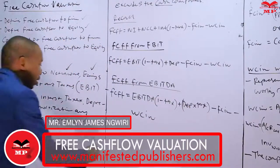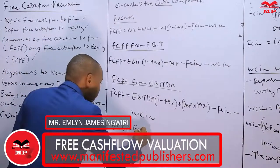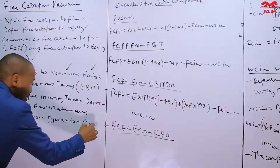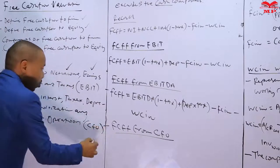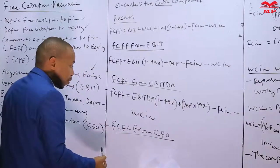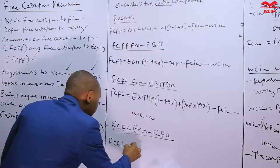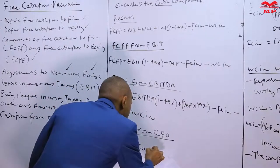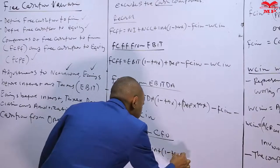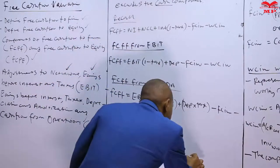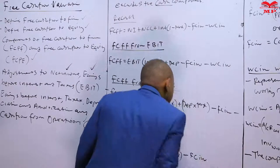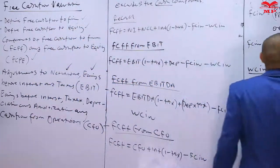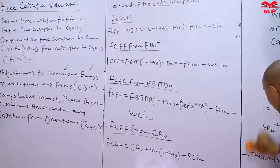Finally, we can also start from cash flow from operations. FCFF from CFO: we take CFO — cash flow from operations — then we add interest times (1 minus tax), then we subtract fixed capital investments. That summarizes all of the calculations for how we can compute FCFF.